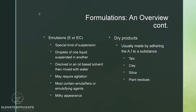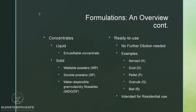Dry products are usually made by adhering the active ingredient to a substance like talc powder, clay, silica, or paint residues. Concentrates can be liquid or solid — liquid would be an emulsifiable concentrate; solids include wettable powders (WP), soluble powders (SP), and water dispersible granules or dry flowables (WDG or DF). Ready-to-use products do not require further dilution — examples include aerosol, dust, pellet, granule, baits, and ready-to-use residential products.